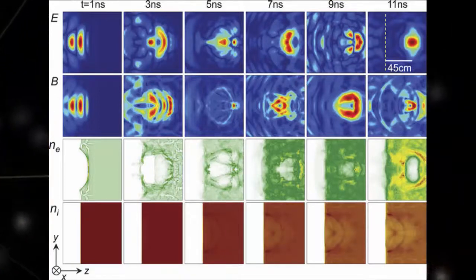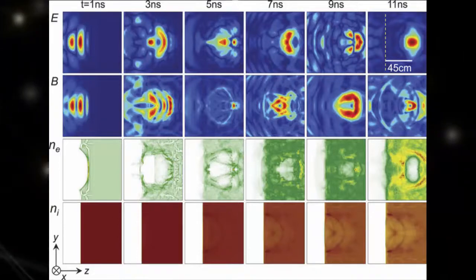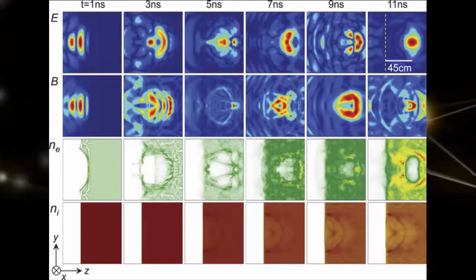What makes this a skyrmion rather than a quantum knot is that not only does the spin twist, but the quantum phase of the condensate winds repeatedly, Hall says.